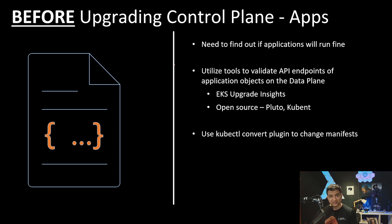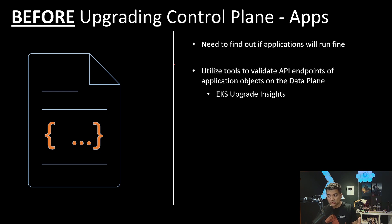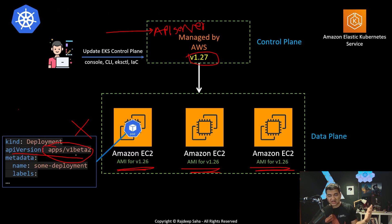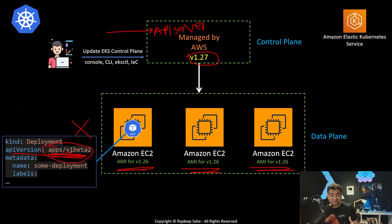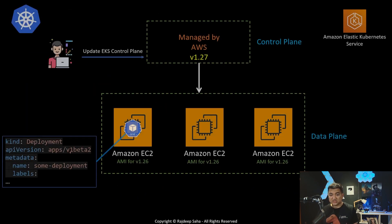You can also use open-source tools like Pluto or kubent. You can use the kubectl convert plugin to change manifests from one API version to the next where needed, and you can check Kubernetes changelogs to see what has changed. Not all Kubernetes changes are backward compatible. Kubernetes will give you a few versions before making a permanent change — they will keep both the old and new API versions for a couple of releases so you can test, and then in one version they will remove the deprecated one. Pay close attention before upgrading to which APIs are deprecated.